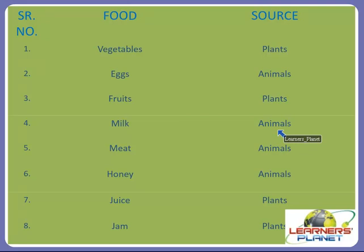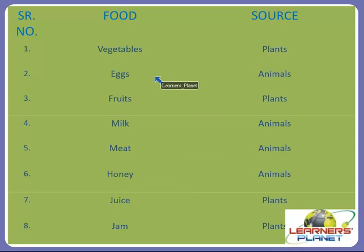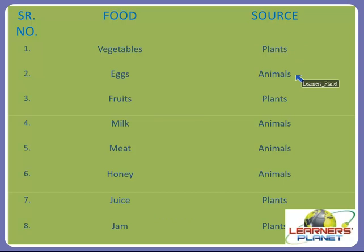Cheese and butter are not obtained directly — they are processed, so we call them milk products. Birds and other animals lay eggs, which is also a direct form of food available to us. Even bees produce honey, a nectar produced from flowers, which is a popular sweetener in many cultures. So there are many food items we obtain directly or indirectly, but they all come from plants and animals. We should take steps to conserve them rather than destroying trees.